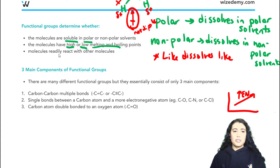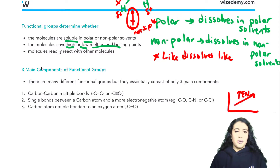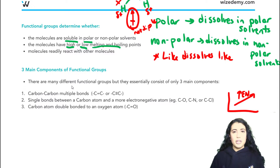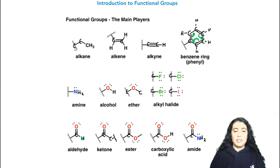Functional groups can also determine which molecules can readily react with other molecules — we'll look at some reactions in this chapter, but mostly reactions will be focused on in the next chapter. There are three main components of functional groups: ones with carbon-carbon multiple bonds, like alkenes with a carbon-carbon double bond and alkynes with carbon-carbon triple bonds.